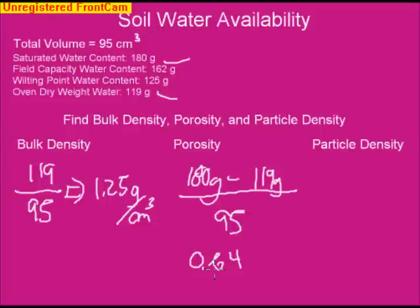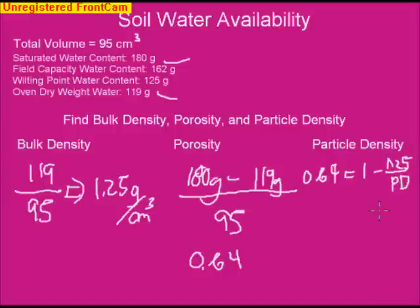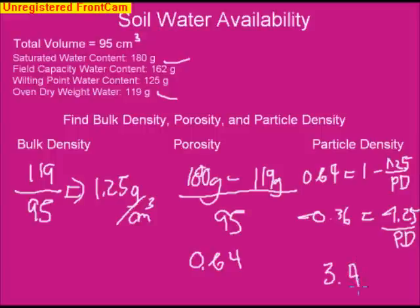Next, we calculate particle density using the porosity equation: 0.64 equals 1 minus 1.25 over particle density. Rearranging gives negative 0.36 equals negative 1.25 over particle density, yielding a particle density of 3.47 grams per cubic centimeter. This isn't a realistic value — it's the result of made-up numbers.